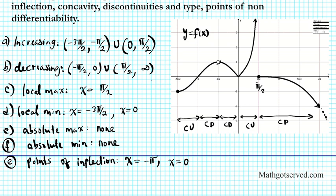Quick correction: x = 0 is not a point of inflection. At x = 0 there is a corner, so the first derivative doesn't exist, and hence the second derivative doesn't exist. It's impossible to rigorously define a point of inflection there. If you have a case of non-differentiability — a corner or cusp — you cannot define that point as a point of inflection. So the only point of inflection is x = negative π. Corners do not qualify as points of inflection; you need a smooth point.